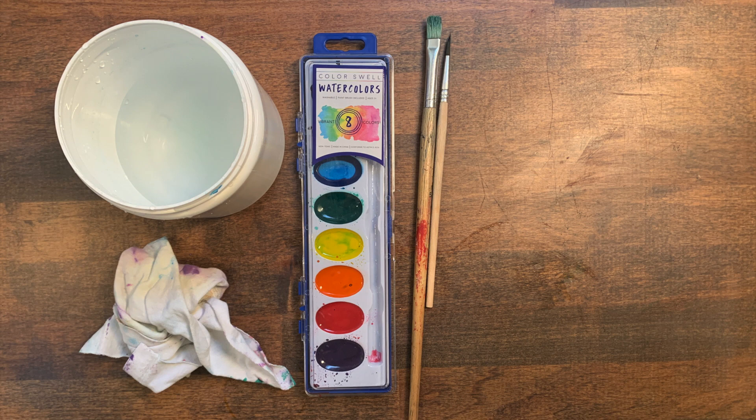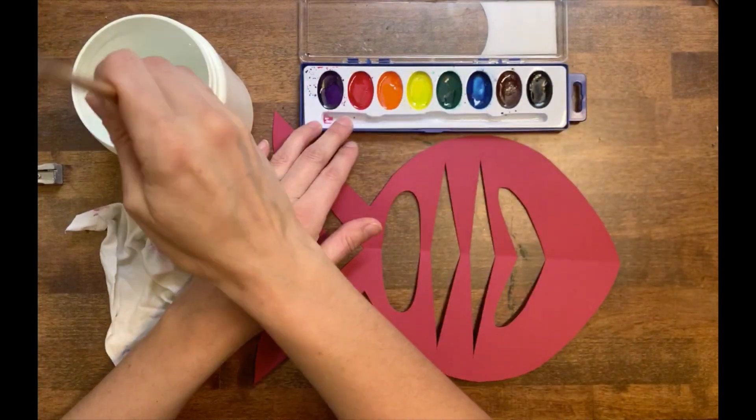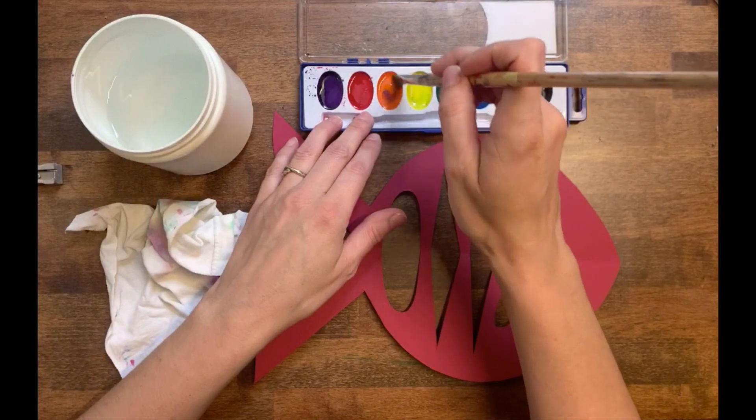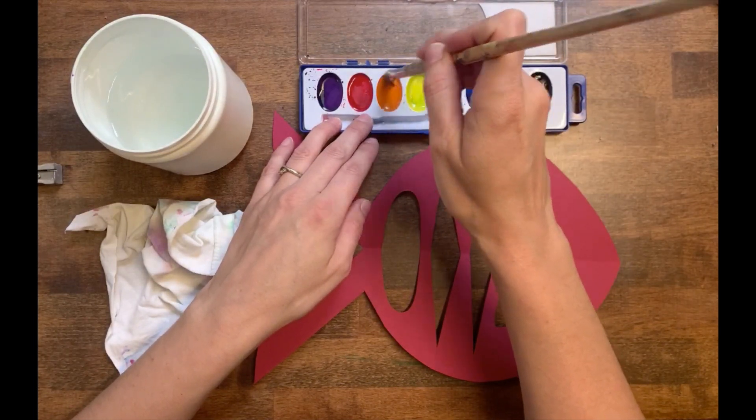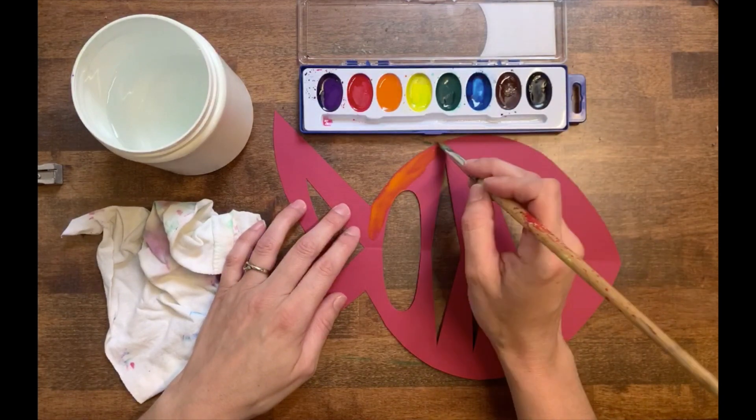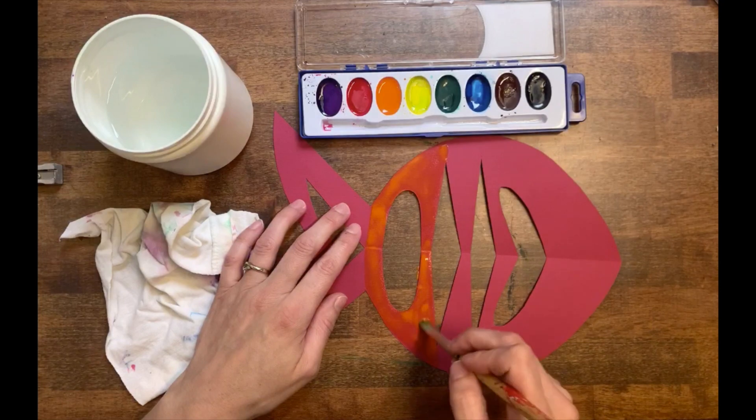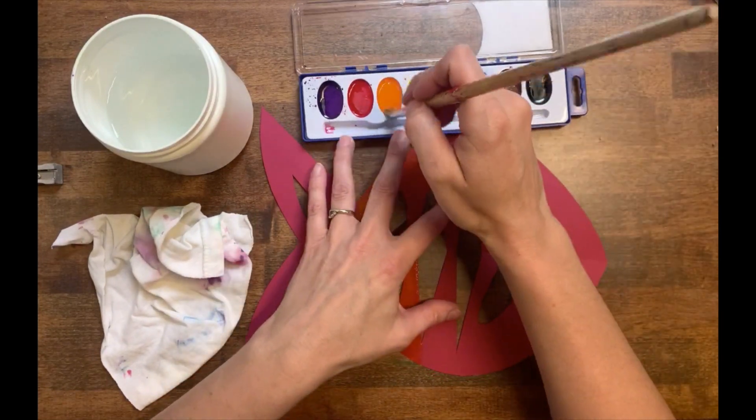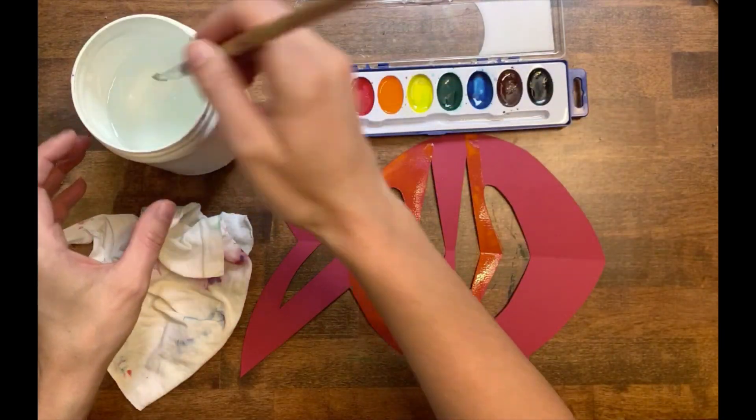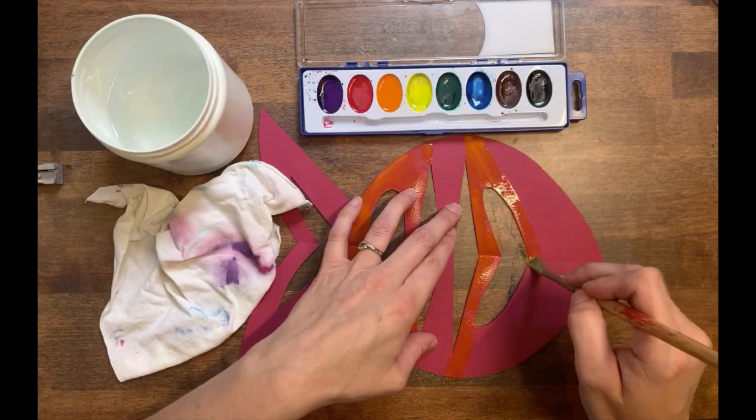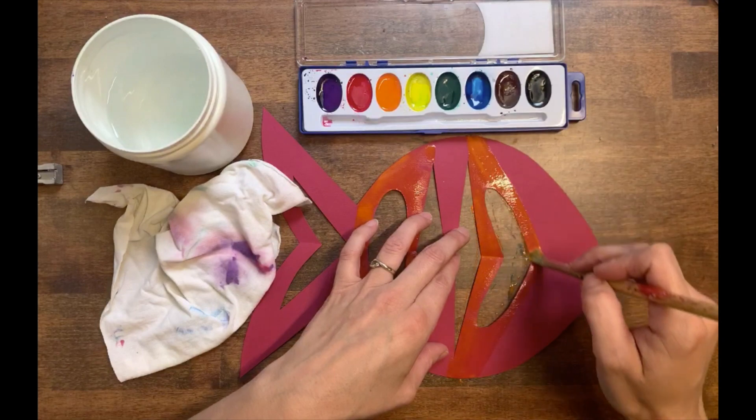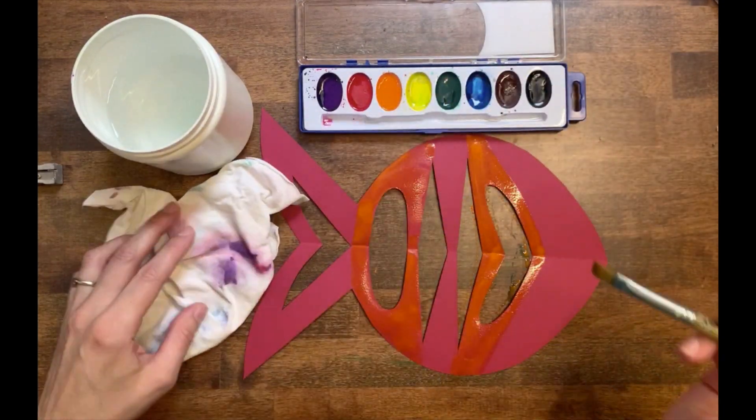Now it's time to decorate our fish. You can use crayons, colored pencils, markers, or paint. If your parents are okay with letting you paint, get out your paint, your cup of water, your rag, and your paint brushes. If you're using watercolor paint like I am, you'll want to put a couple drops of water into each color. That helps get the watercolor paint ready for use. As you paint, think about symmetry and try to make your painting design symmetrical, the same on the top as it is on the bottom of your fish.